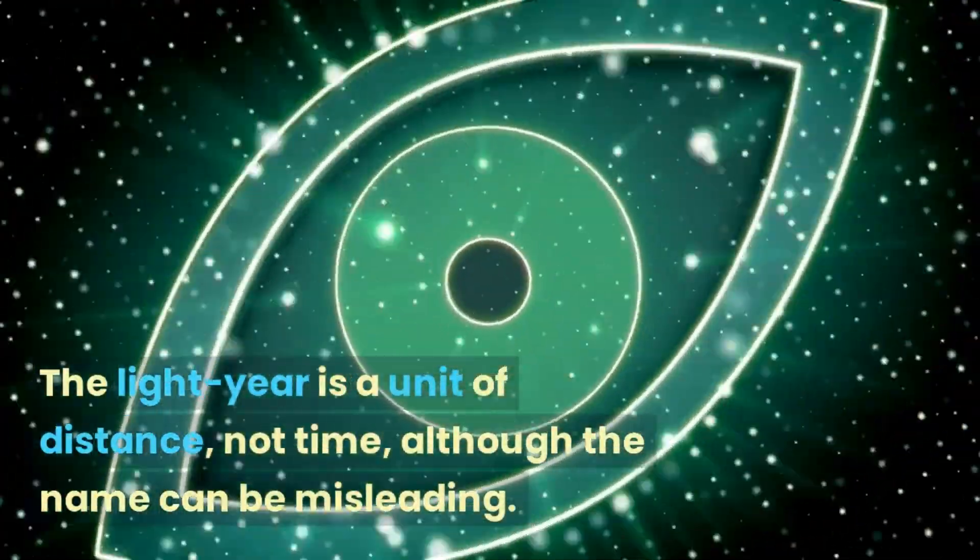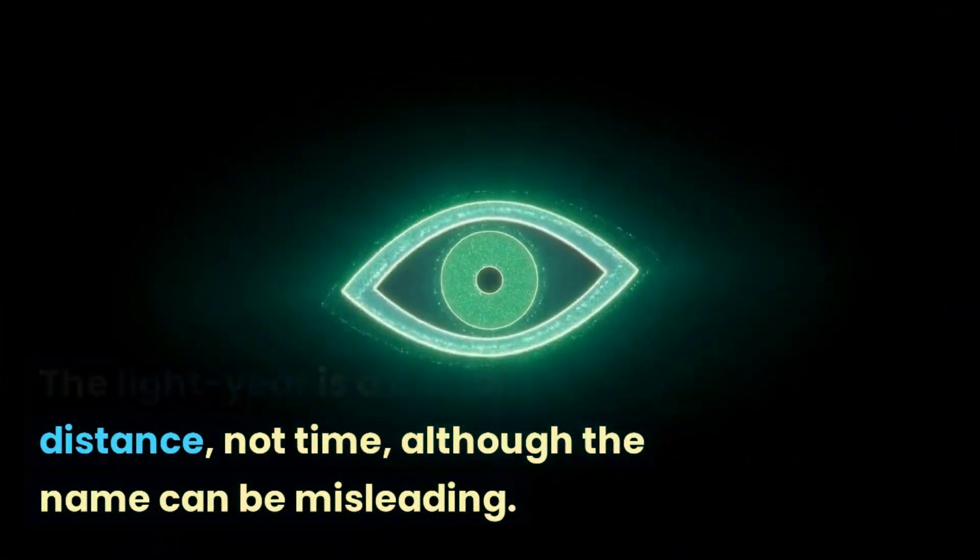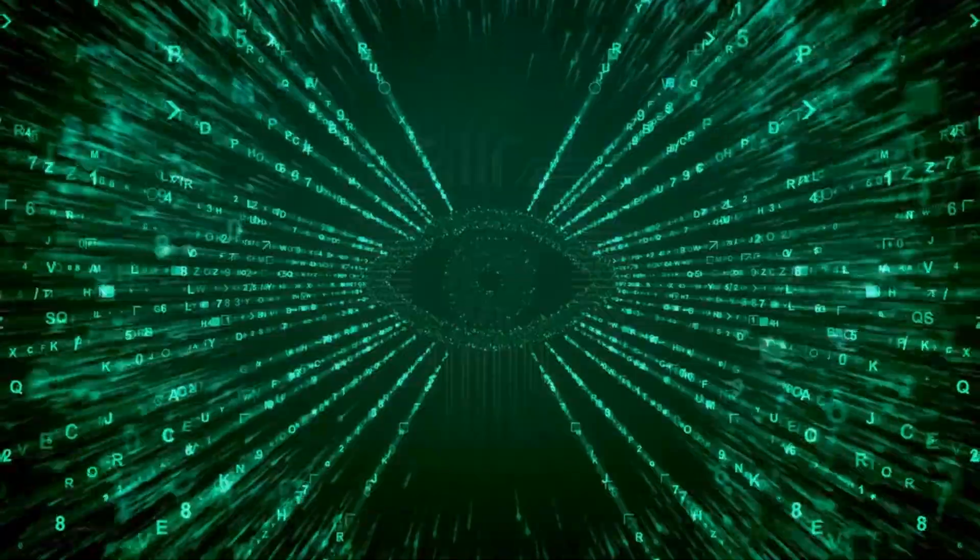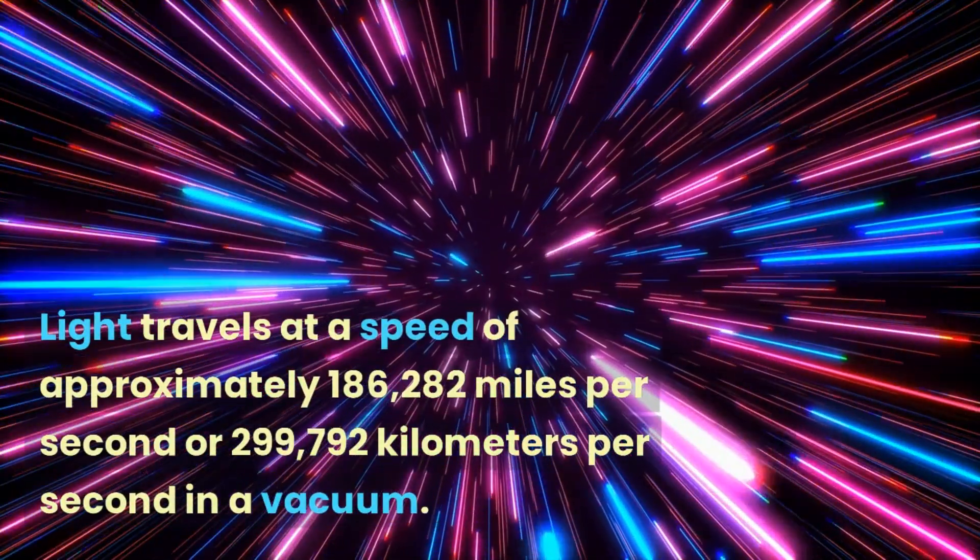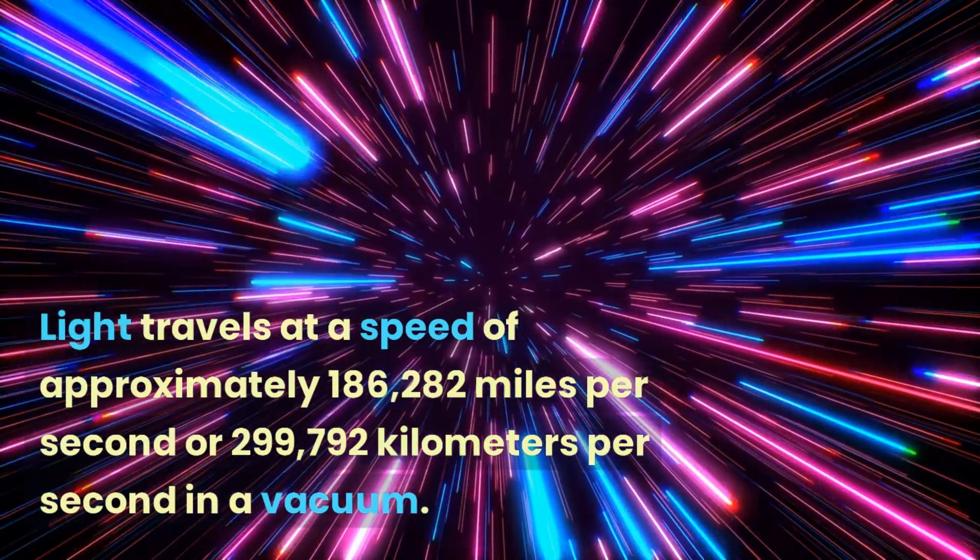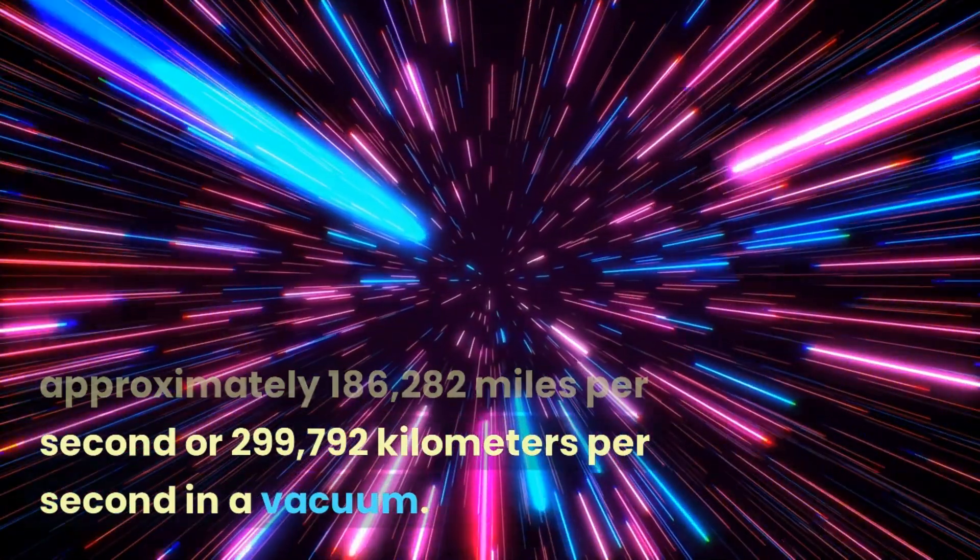The light year is a unit of distance, not time, although the name can be misleading. Light travels at a speed of approximately 186,282 miles per second or 299,792 kilometers per second in a vacuum.